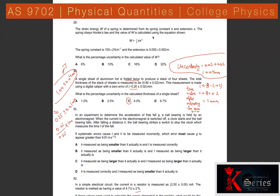Question 29: The strain energy stored in a spring is W = ½kx², where spring constant k = 100 ± 2 N/m and extension x = 0.050 ± 0.002 m. Power of k is 1, power of x is 2. Percentage uncertainty = (2/100)×100 + 2×(0.002/0.050)×100, giving the total percentage uncertainty in W.